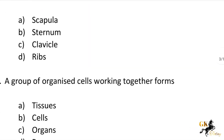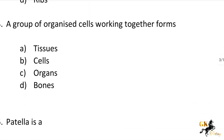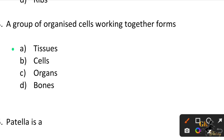Next question: A group of organized cells working together forms — Option A: Tissues. Option B: Cells. Option C: Organs. Option D: Bones. The correct answer is Option A: Tissues.